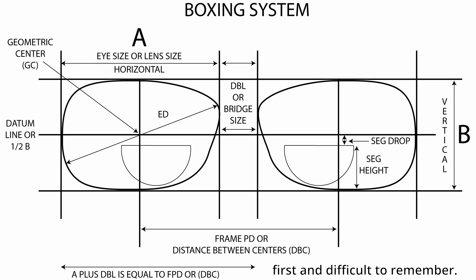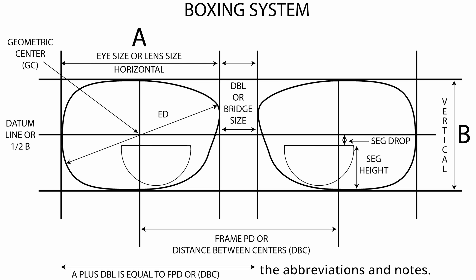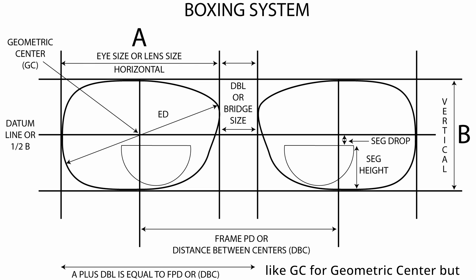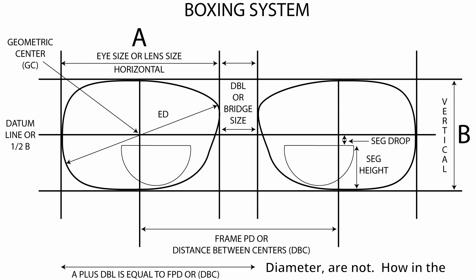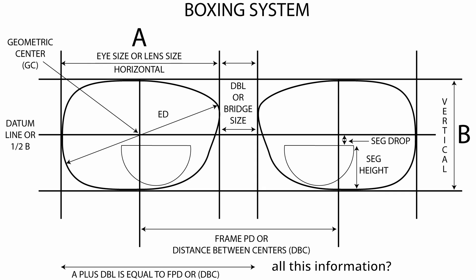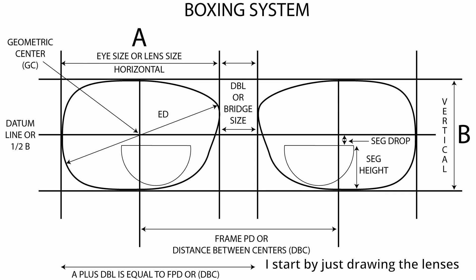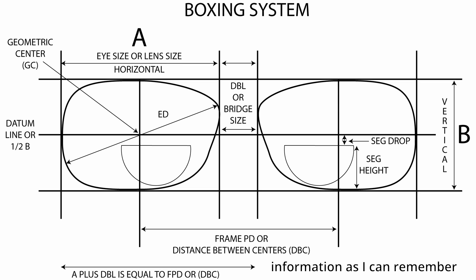It can be daunting at first and difficult to remember. The first step is to understand all the abbreviations and notes. Some are called out in this picture, like GC for geometric center, but others like ED for effective diameter are not. How in the world can you begin to remember all this information? What I do is draw it all out.